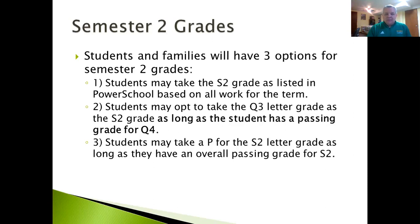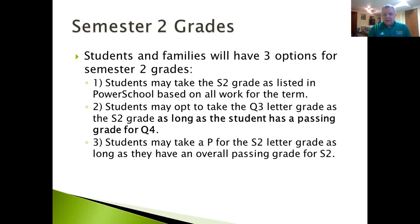Let's say a student didn't do as well as they would have liked during the fourth quarter with required learning from home, but they actually did really well in the third quarter, so their Q3 grade is higher than their Q4 or semester two grade. In that instance, the board approved that as long as the fourth quarter grade is at a passing level, the student can take the quarter three letter grade as their second semester grade.